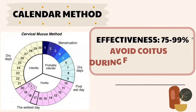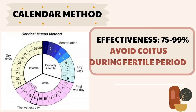The first natural method is the calendar method. The most fertile period for a woman is the 14th, 15th, or 16th day of the cycle, because ovulation occurs at that time, resulting in the presence of an ovum in the fallopian tube. The chances of fertilization are very high during this period, so coitus should be avoided during the period of approximately 10 to 20 days, as shown in the diagram.